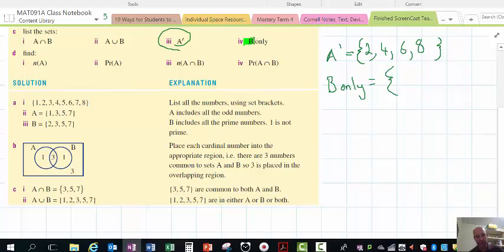The next one says B only. So things that are in B, but there's no sharing with anything else. So they're not shared with A or anything else. So there's just one thing that's there, one element.